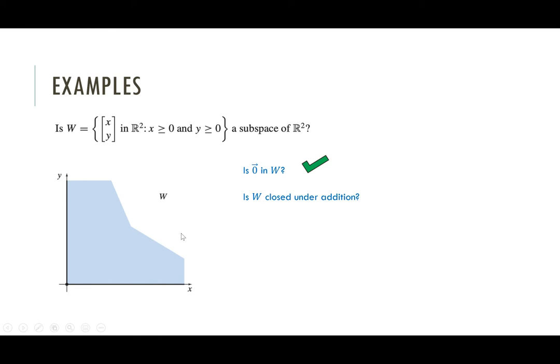Is w closed under addition? Well, geometrically, if you just kind of pick two vectors and you add them together, it certainly seems geometrically like you're going to stay in w. A more algebraic proof of this is that if the components are non-negative, then adding two vectors with non-negative components is going to keep you with non-negative components. So definitely closed under addition. What about scalar multiplication? Take some vector. Certainly if you double it or triple it or multiply it by five million, you're going to stay in there. But if you multiply it by say negative one, you pop out. So actually w is not closed under scalar multiplication. So in fact, this w is not a subspace of R2.